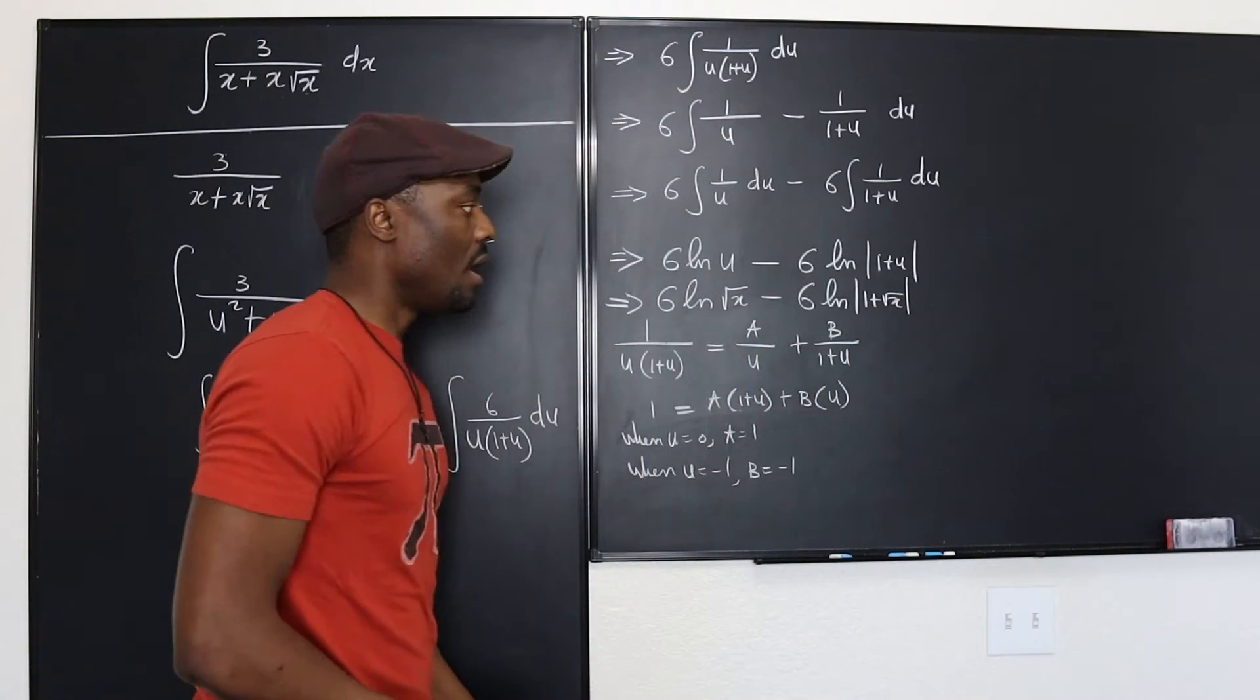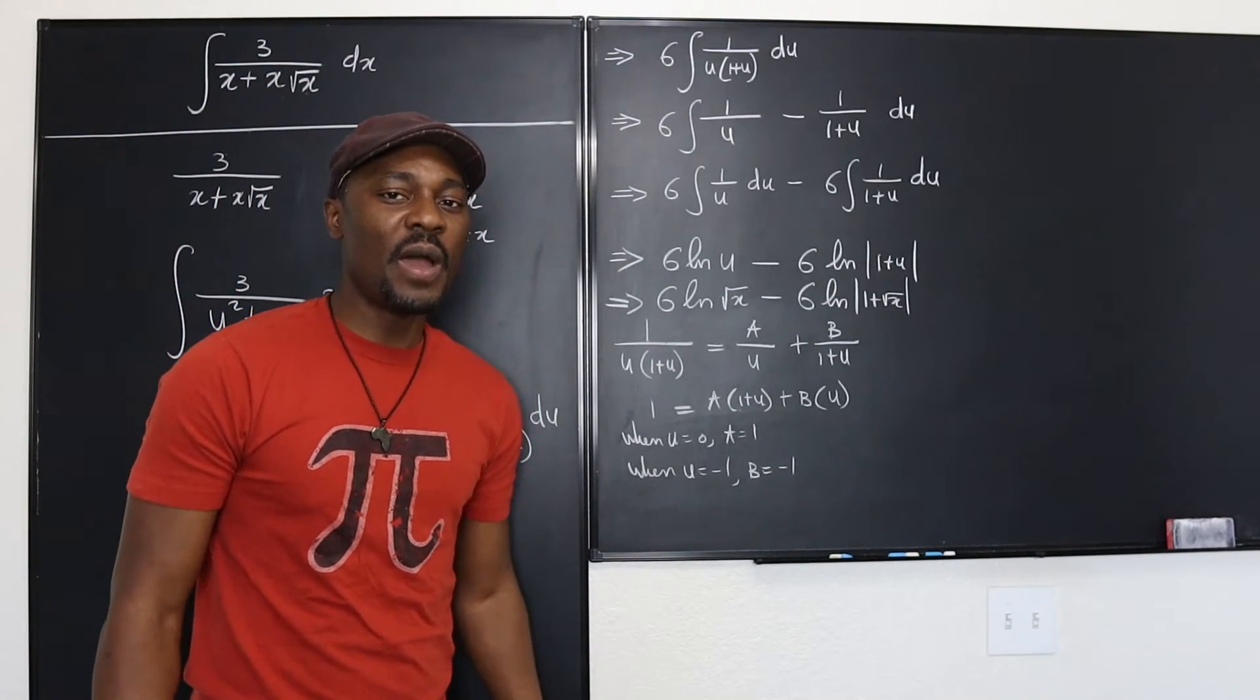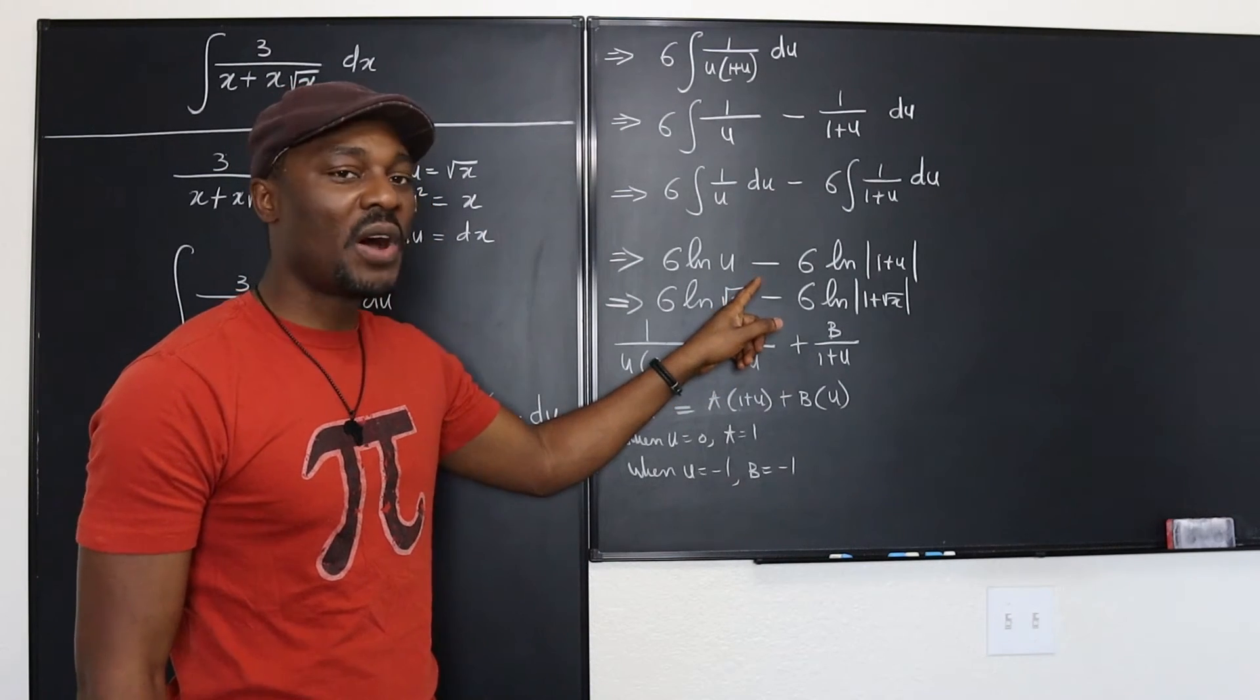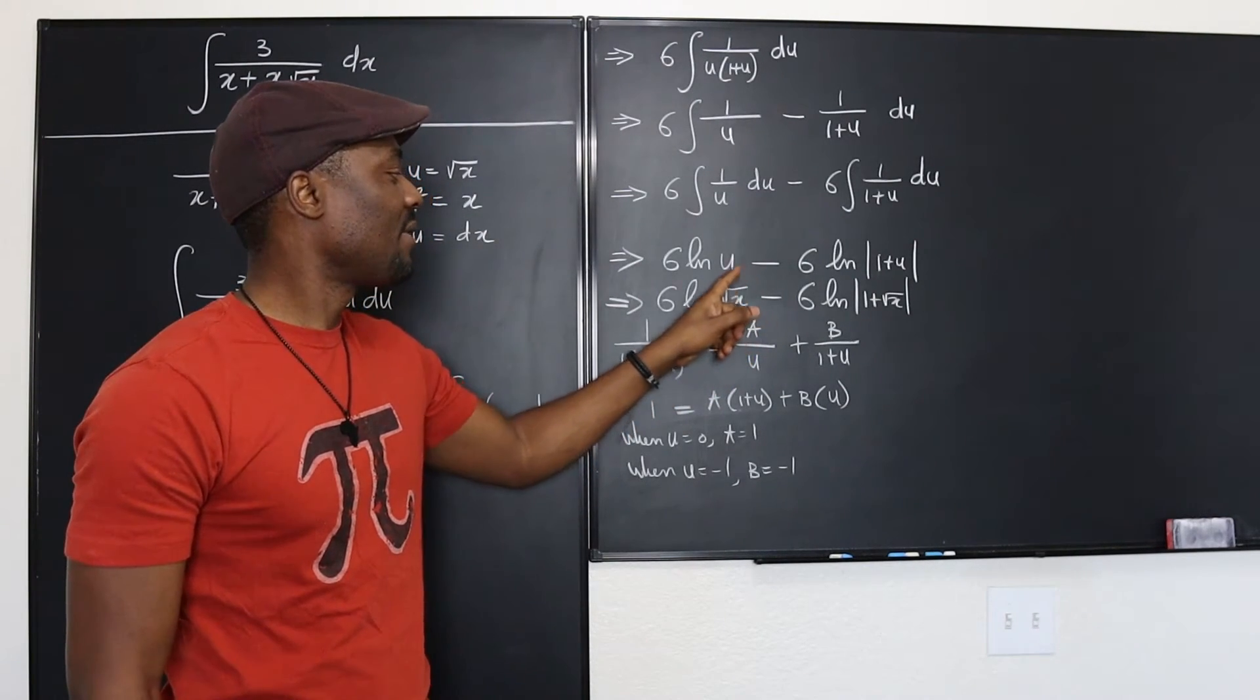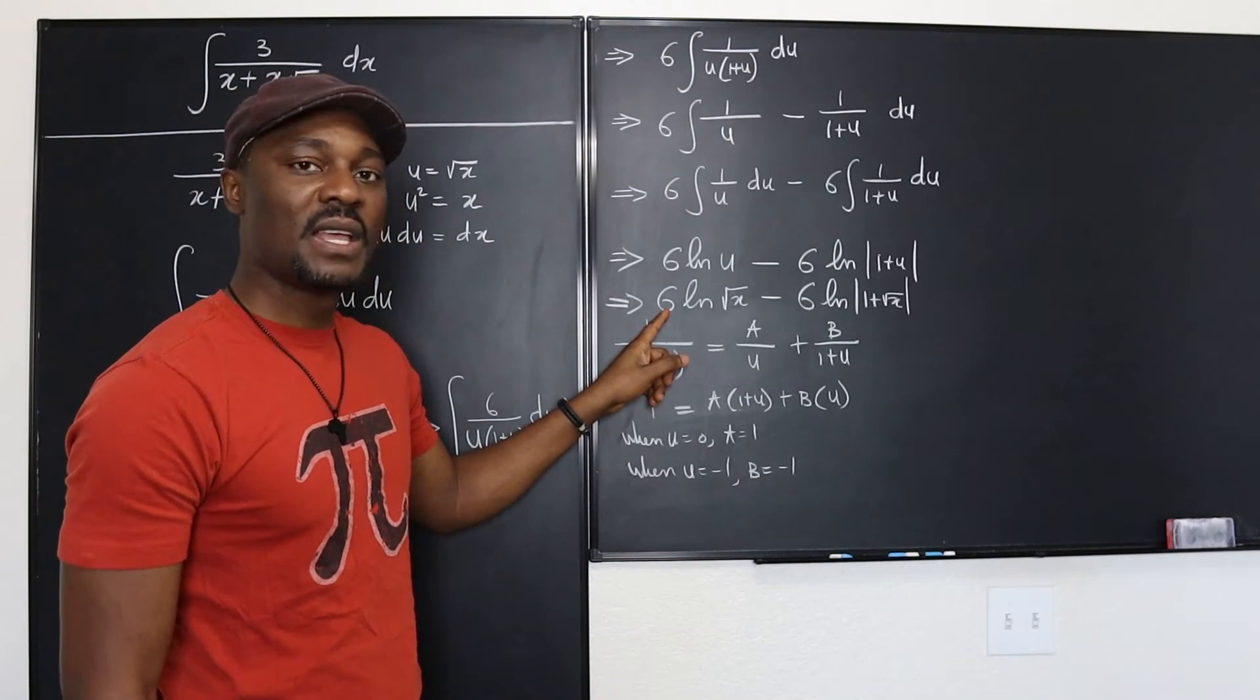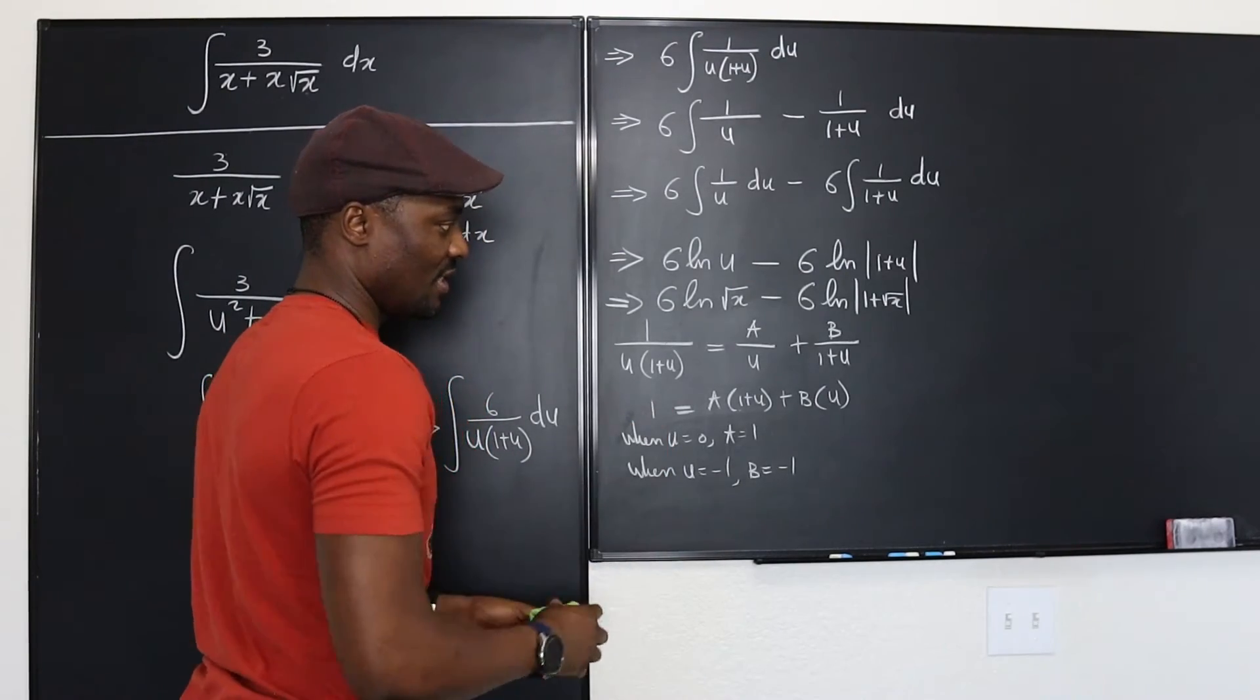That should be our final answer, however you know you can actually write this as x to the one half, take the one half, use it to multiply this. That's going to be one half of 6, and you can actually change this. So I'm going to take this off.